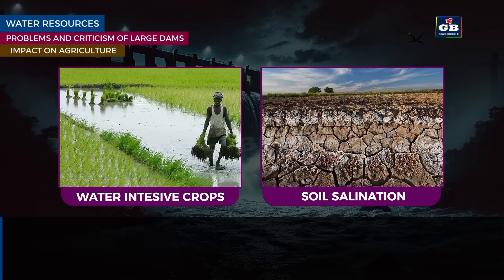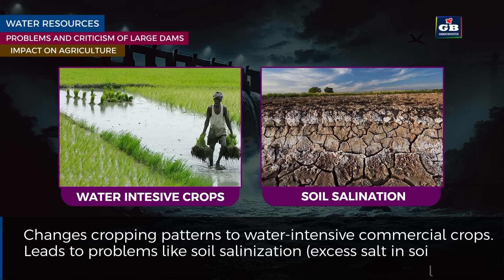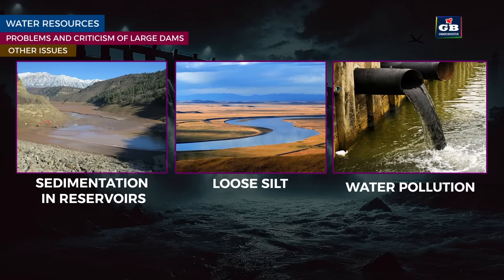Impact on agriculture: dams change cropping patterns toward water-intensive commercial crops and lead to soil salinization, meaning excess salt accumulates in the soil. Other issues include floods caused by sedimentation in reservoirs, flood plains losing silt and natural fertilizer, worsening land degradation, and dams triggering earthquakes, spreading waterborne diseases and causing pollution.